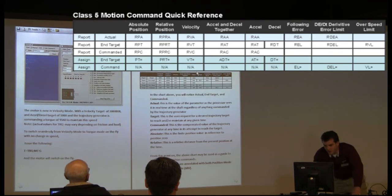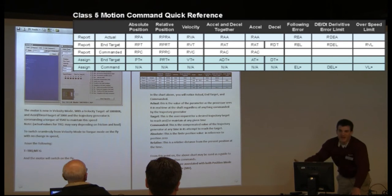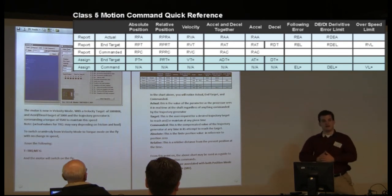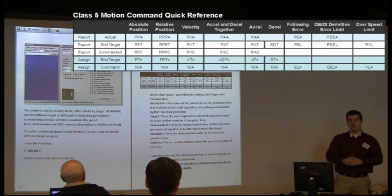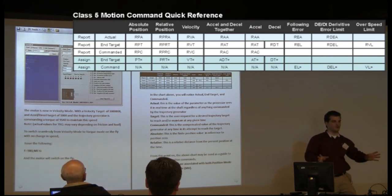You can take a look at following error as well as derivative following error, so you can look at the change in error. For example, if you want something to stop immediately on contact with something rather than hit it and then wait for it to get to its following error limit. We'll cover what exactly the following error is later if you're not familiar with that concept.